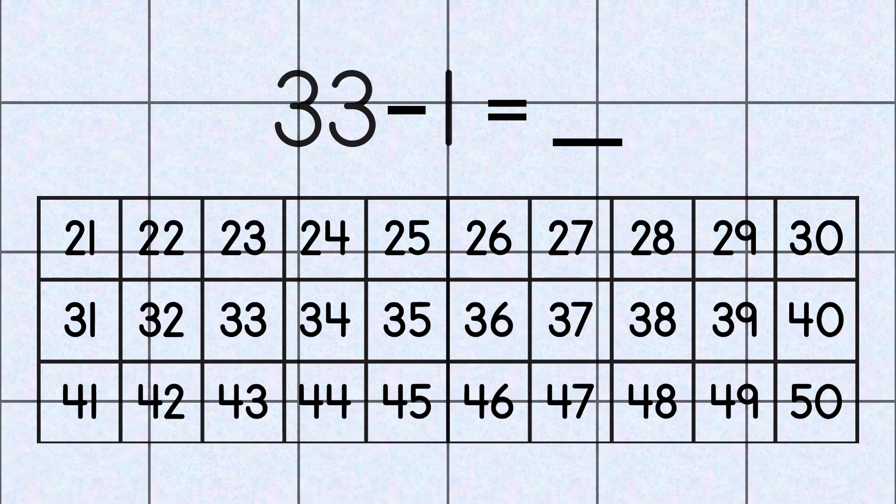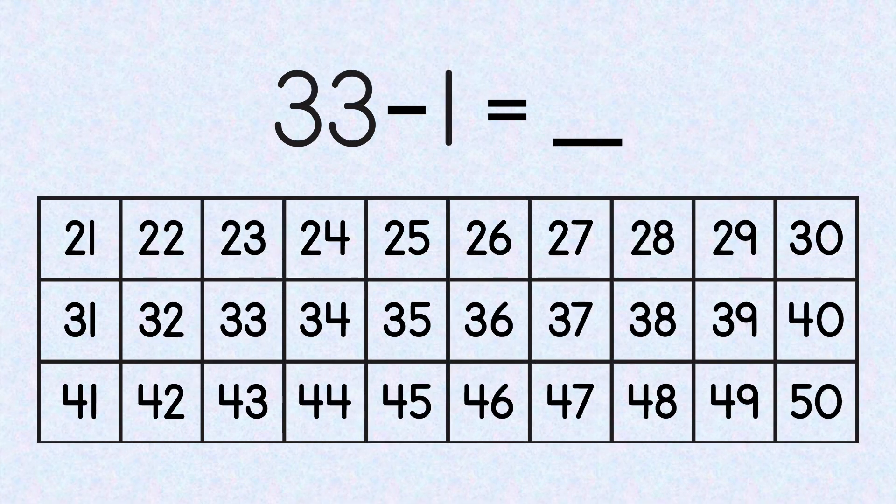So our first number sentence is 33 minus 1 equals blank. First of all, we're going to find 33 on the hundreds chart. Then, whenever we subtract 1, we simply move one box to the left. Find 33, move one box to the left, we get 32. So 33 minus 1 equals 32.